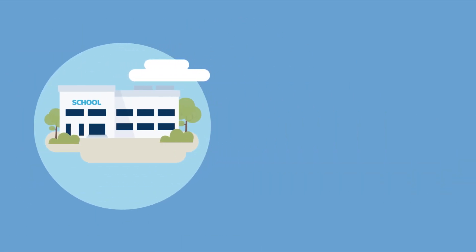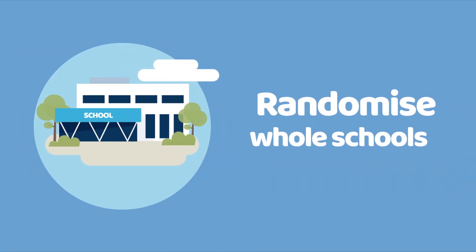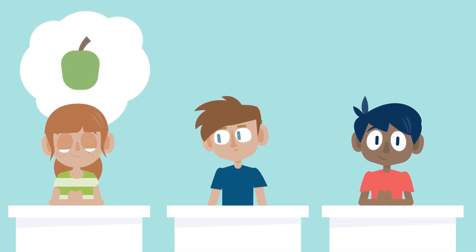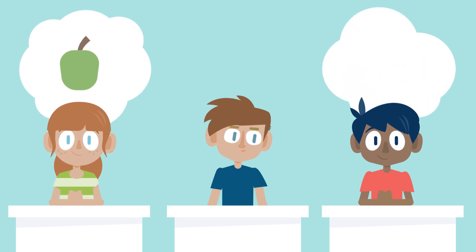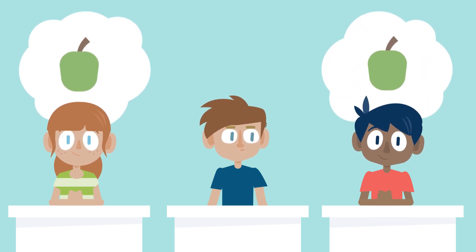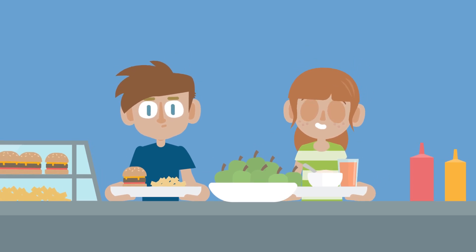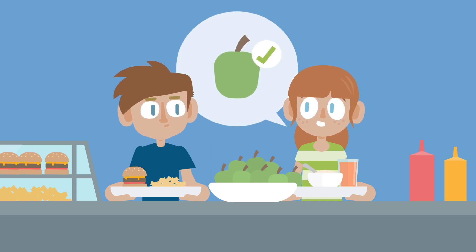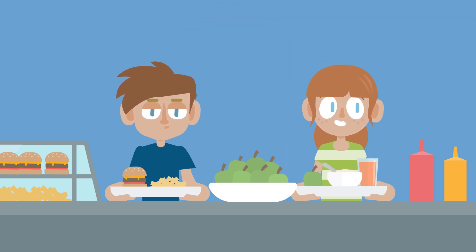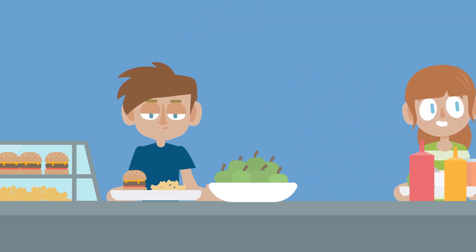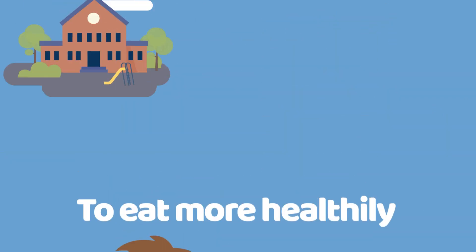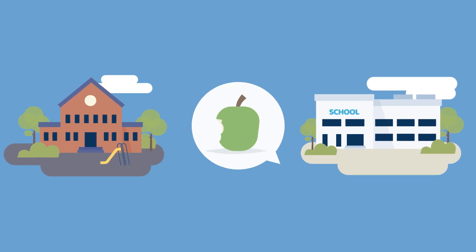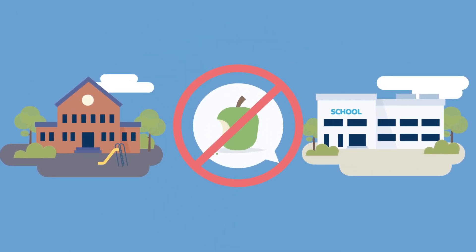It was important for this study to randomise whole schools rather than individual children. If individual children were randomised, some children in the same school would have the healthy eating lessons and some would not. Children who had the healthy eating lessons might have chatted to children who didn't receive the lessons about what they'd learned, and those children might have been influenced by their friends and started to eat more healthily. As whole schools were randomised in the cluster trial, researchers reduced the chance of children talking to each other about healthy eating.